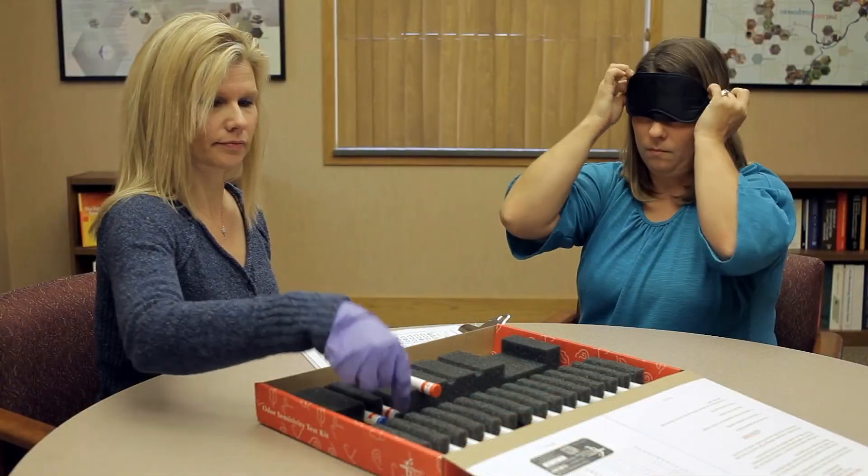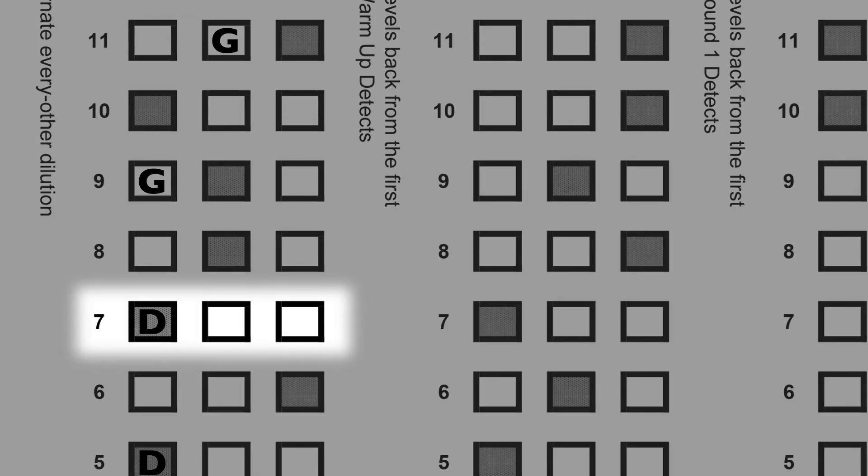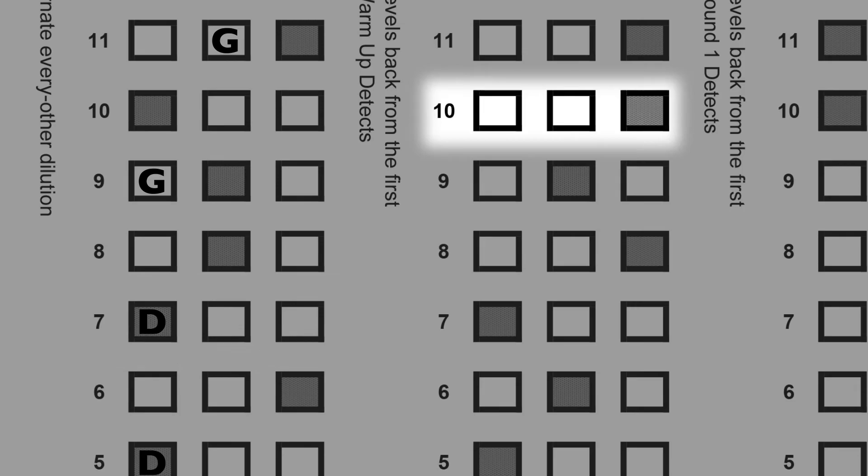Now, give your subject a five-minute break to rest their nose. Round one will now start. Round one starts three pen levels from the first detected pen in the warm-up. Since the first detection was at pen number seven, round one will start at pen number ten.